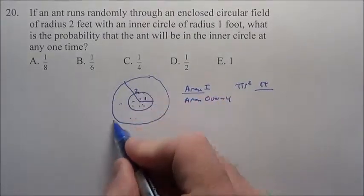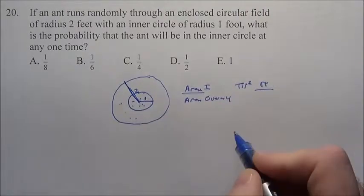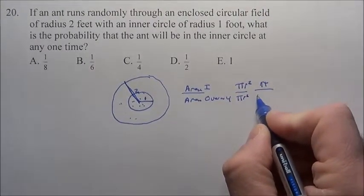Well, what's the total area of the whole big thing? Well, that has a radius of 2, so that's pi r squared, pi times 2 squared, that's 4 pi.